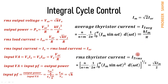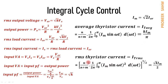Similarly, the RMS thyristor current is found by squaring the instantaneous thyristor current Im sin(ωt), integrating over 0 to π, multiplying by the duty cycle factor, and taking the square root. The integral of sin²(ωt) over 0 to π gives π, and after simplification, the RMS thyristor current becomes √K × Im/2, where Im is the peak output current equal to √2 times the RMS output current.